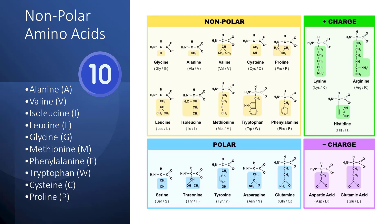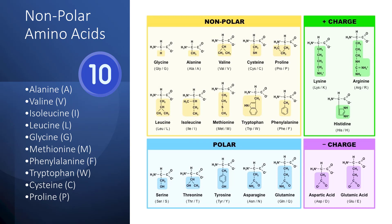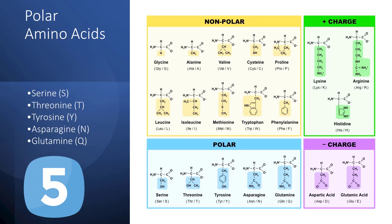The first category is nonpolar amino acids, and there are 10 amino acids within this group: alanine, valine, isoleucine, leucine, glycine, methionine, phenylalanine, tryptophan, cysteine, and proline. The next category is polar amino acids, and there are five representative members: serine, threonine, tyrosine, asparagine, and glutamine.